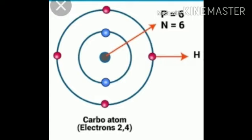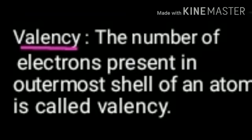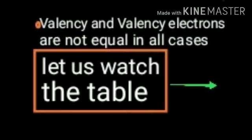Outer cell electrons are participating in chemical bonding. Let us know about valency. The number of electrons present in the outermost cell of an atom is called valency. Valency and valency electrons are not equal in all cases.